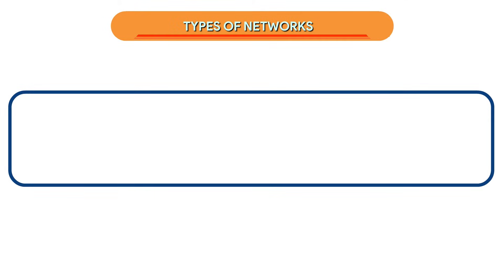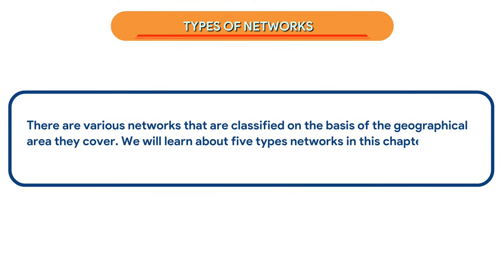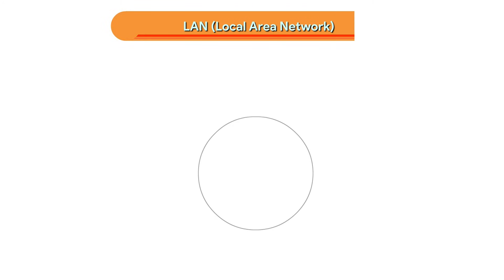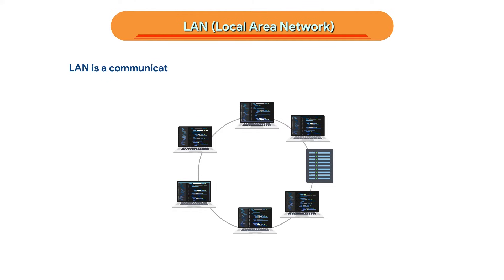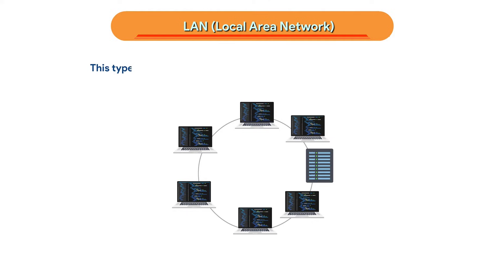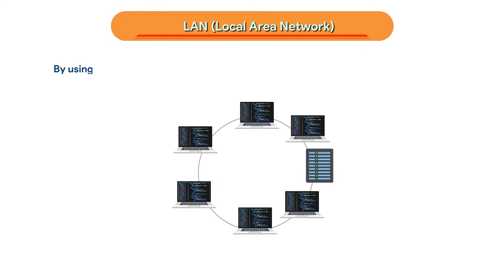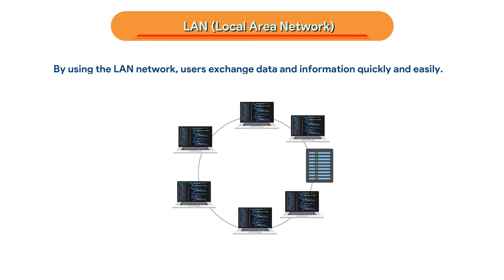There are various networks classified on the basis of the geographical area they cover. LAN (Local Area Network) is a communication system that digitally interconnects a large number of computers and other devices within a 1 km radius. It is usually preferred for smaller areas such as schools, residences, universities, offices, etc. Users can exchange data and information quickly and easily, with cables and communication devices connecting computers to the LAN.